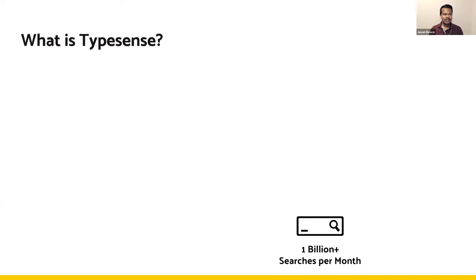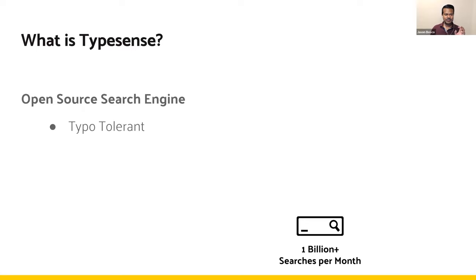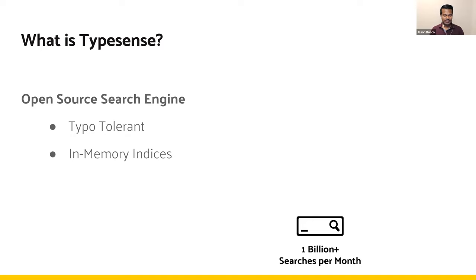In a nutshell, Typesense is a typo-tolerant search engine — fuzzy search is built into the engine without much tweaking. It is an in-memory search engine, which is one big difference from Elasticsearch. When we started in 2015, one of the bets we took was that RAM is only going to get cheaper over time, and that has held true. So we decided to put everything in memory and optimize all our data structures for fast in-memory search, rather than straddling the world of on-disk versus a little bit of RAM cache.